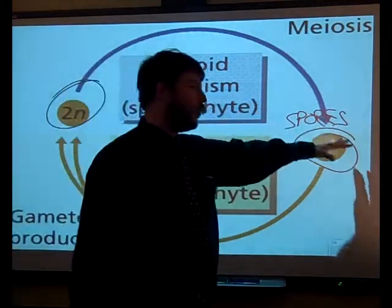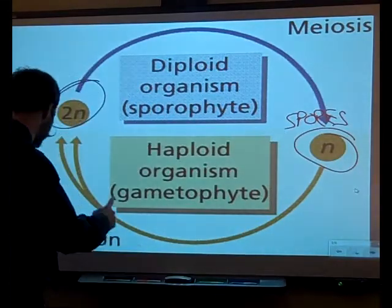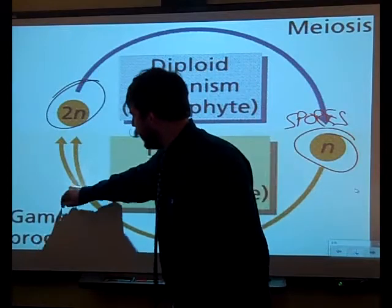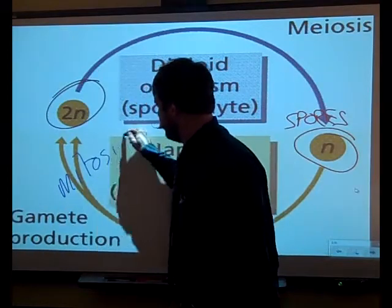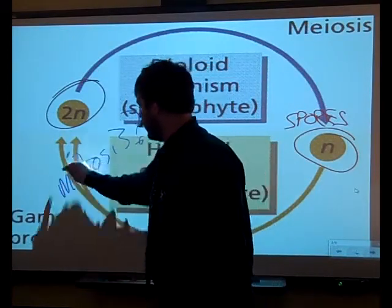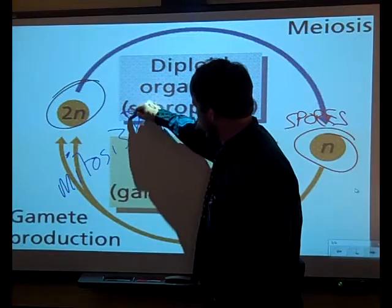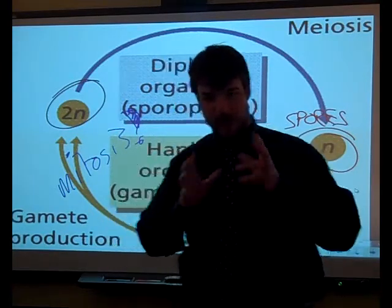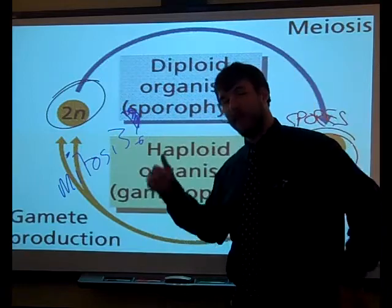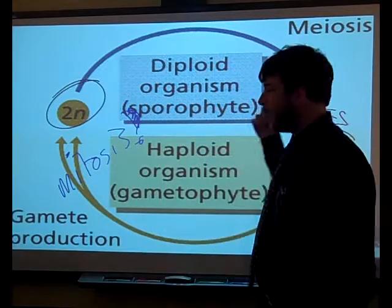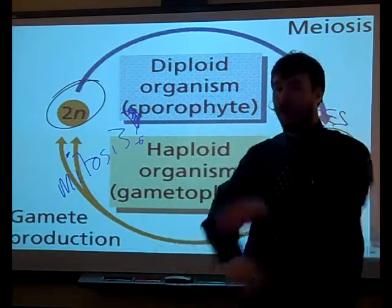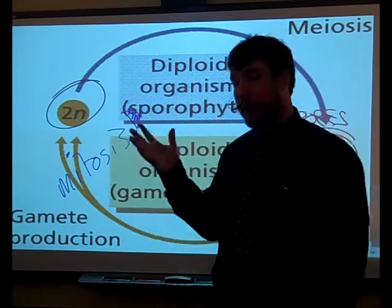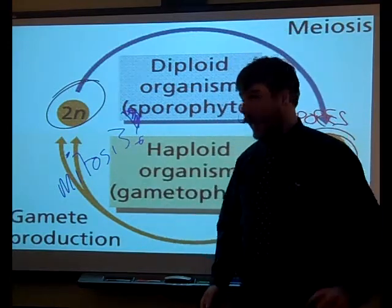It grows, it develops, it does its thing. It actually does mitosis to make the gametes — which is true, so it'll be an exclamation point. It's weird, I know, because we've learned that gametes are made by meiosis, except in plants. The gametes are made by the haploid gametophyte. The whole organism only has half the DNA, so it does mitosis to make the little sperm and the egg.